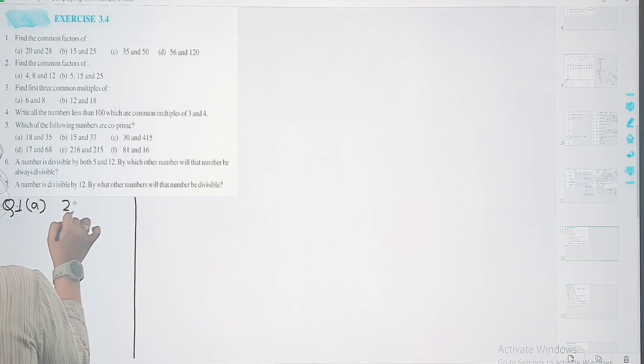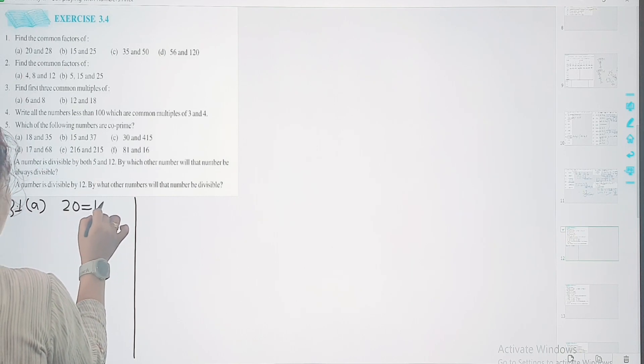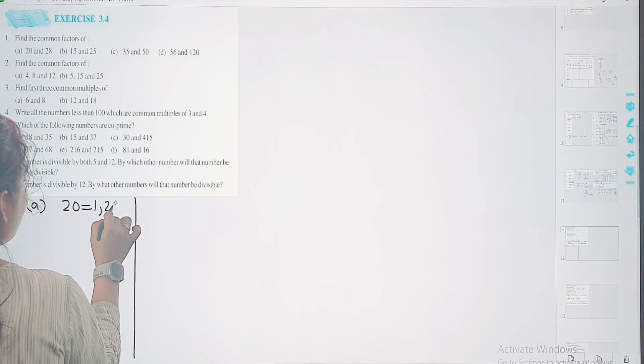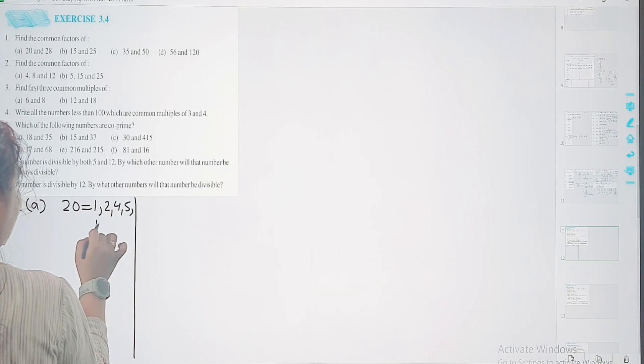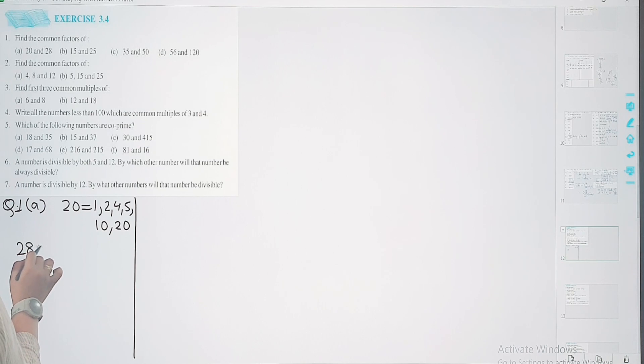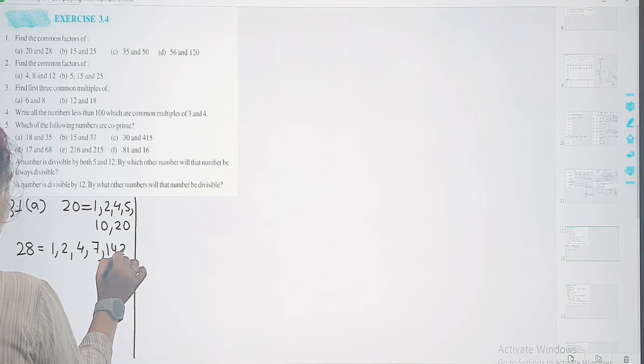Find the common factors of 20 and 28. The first question of NCERT will be done by me for you. Common factors matlab 20 ke factors kya hote hai? 1, 2, 4, 5, 10, and 20. 28 ke factors kya hote hai? Factors woh hote hai jinnke table mein ye given number aate hai. 1, 2, 4, 7s are 2, 14s are, and 28.